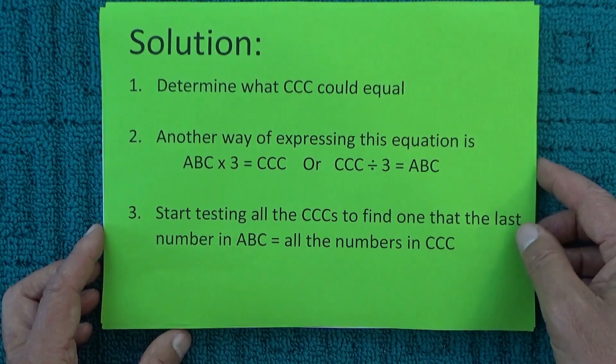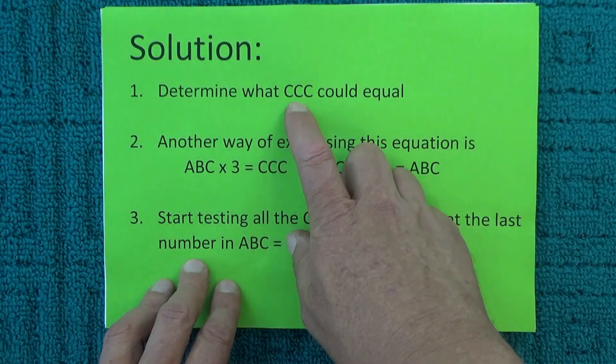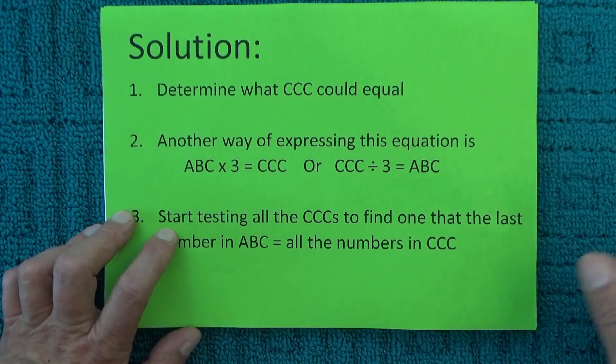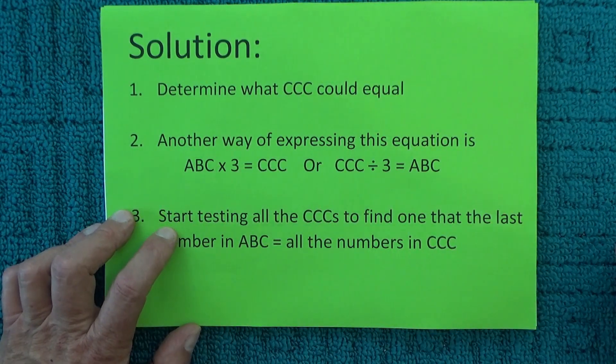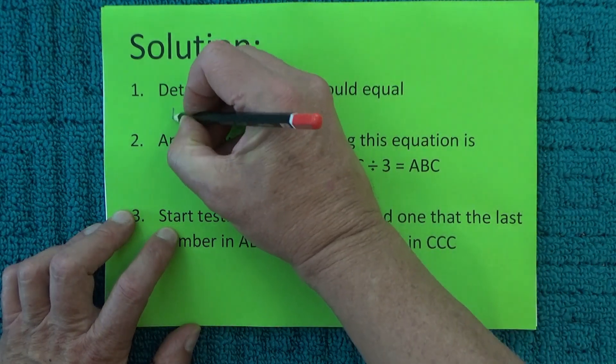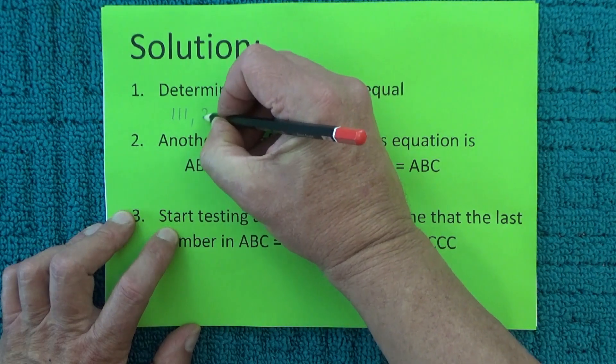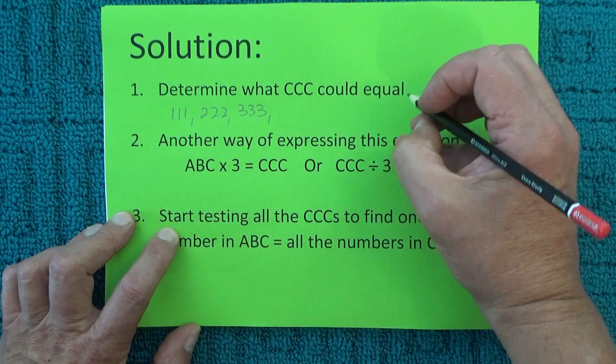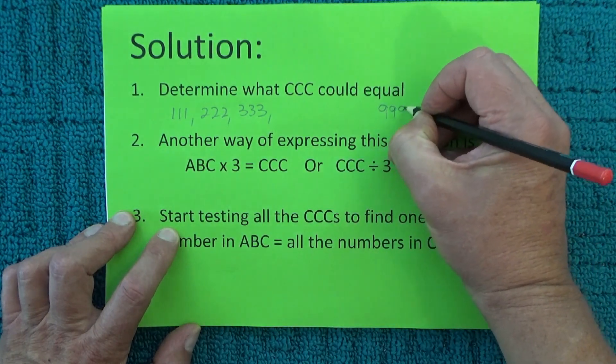The first thing we need to do is determine what CCC could equal. Obviously, CCC can be 111, 222, 333, right through to 999.